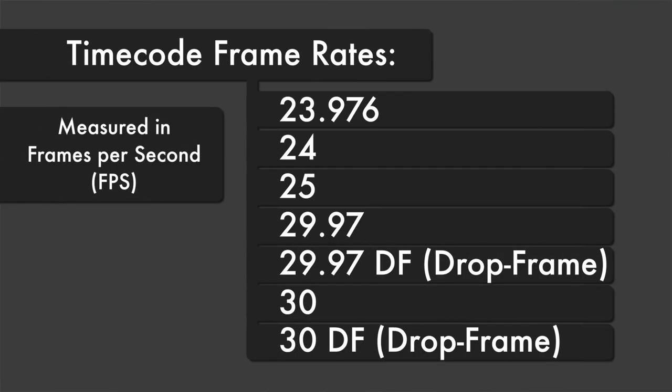On a timecode display, the frame portion indicates the frame number. The timecode frame rate setting determines how many frames are counted each second. The list of all common timecode frame rates are shown here.